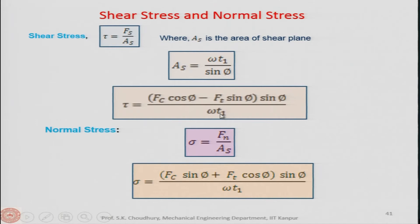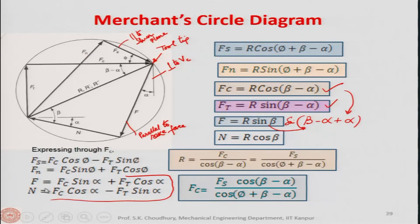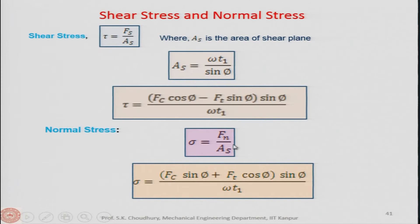T1 is the uncut thickness — these are physical parameters. Similarly, normal stress σ = Fn / As, where As is the shear plane area. Substituting Fn from Merchant's equations gives the normal stress in terms of Fc and Ft. By measuring Fc and Ft and knowing the physical parameters and shear plane angle, we can find both shear stress and normal stress analytically.